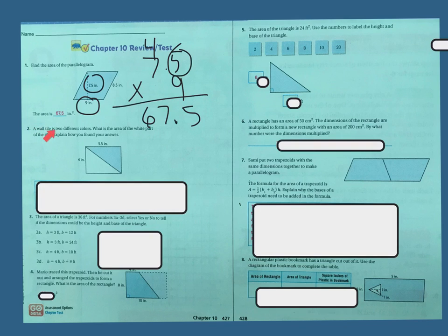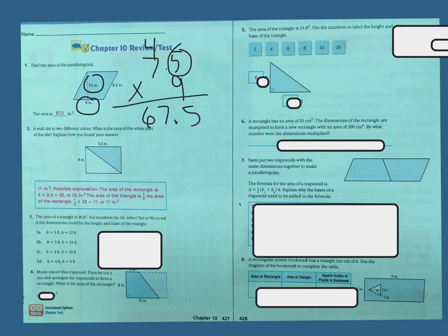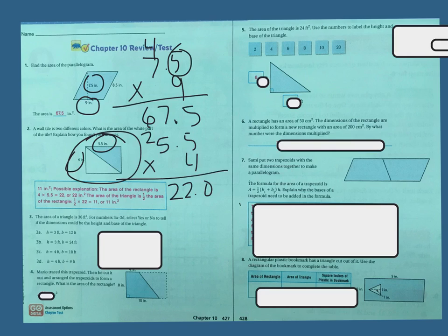Next problem says a wall tile is two different colors. What is the area of the white part of the tile? Explain how you found your answer. So I just want this part of the tile. The way I'm going to do that is the area of the rectangle is 4 times 5.5. 4 times 5 is 20, 4 times 5 is 20, plus that's 22. Then I put my decimal. The area of the big rectangle is that, but I want to find the triangle, which is half of that. Half of 22 is 11.